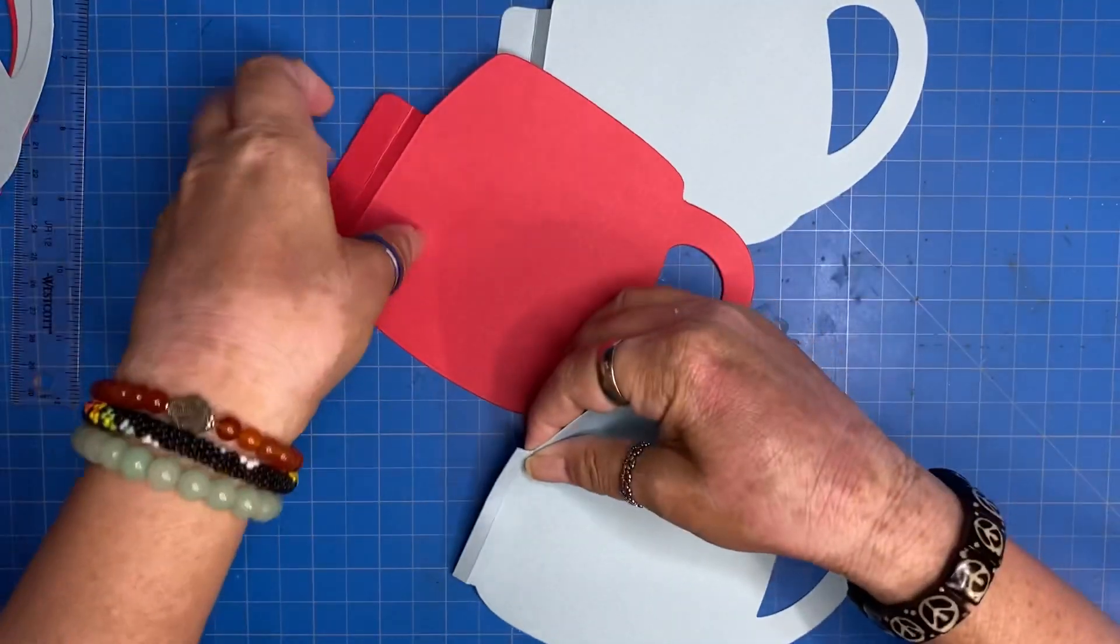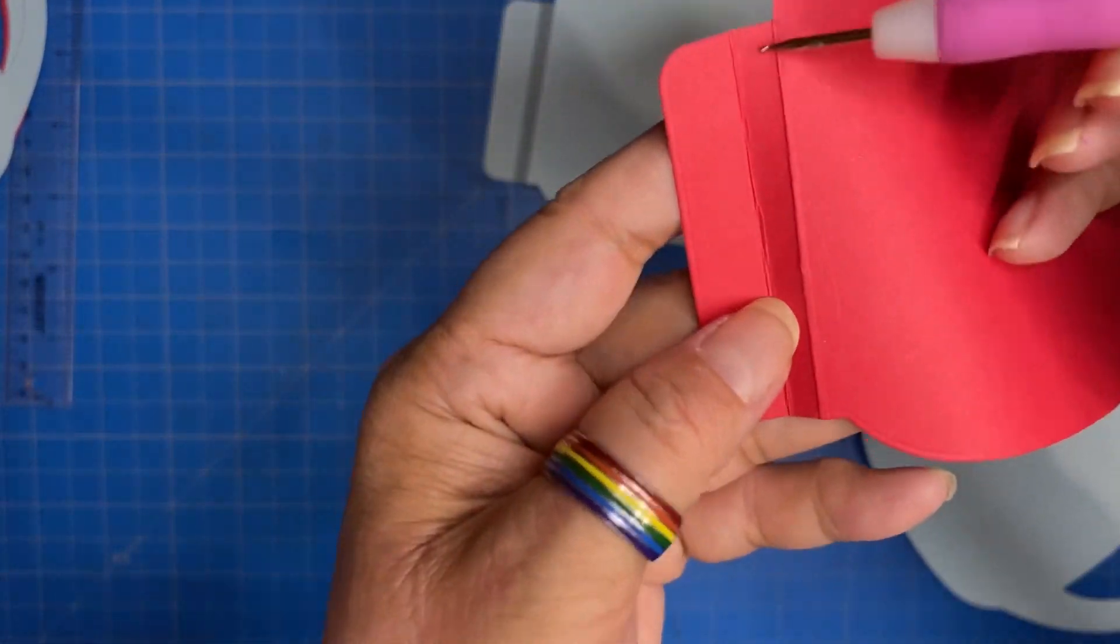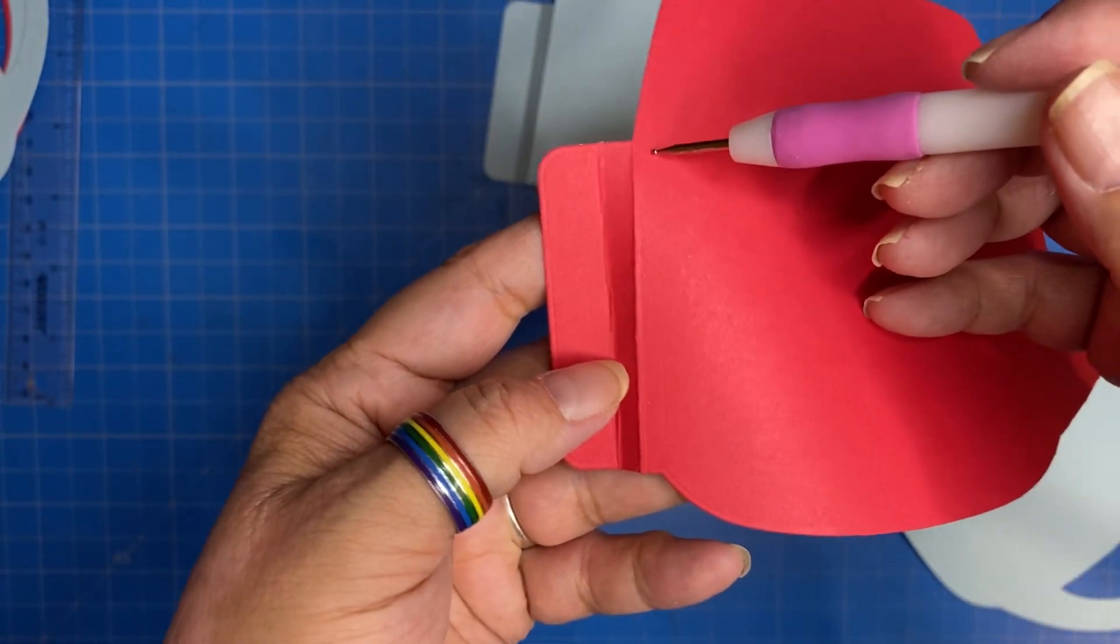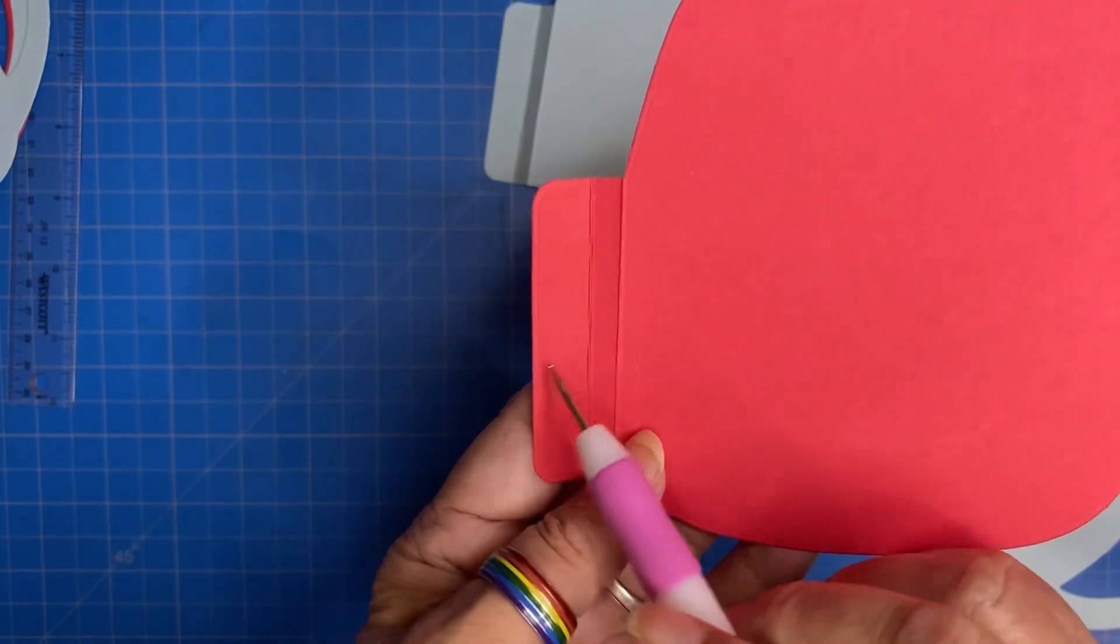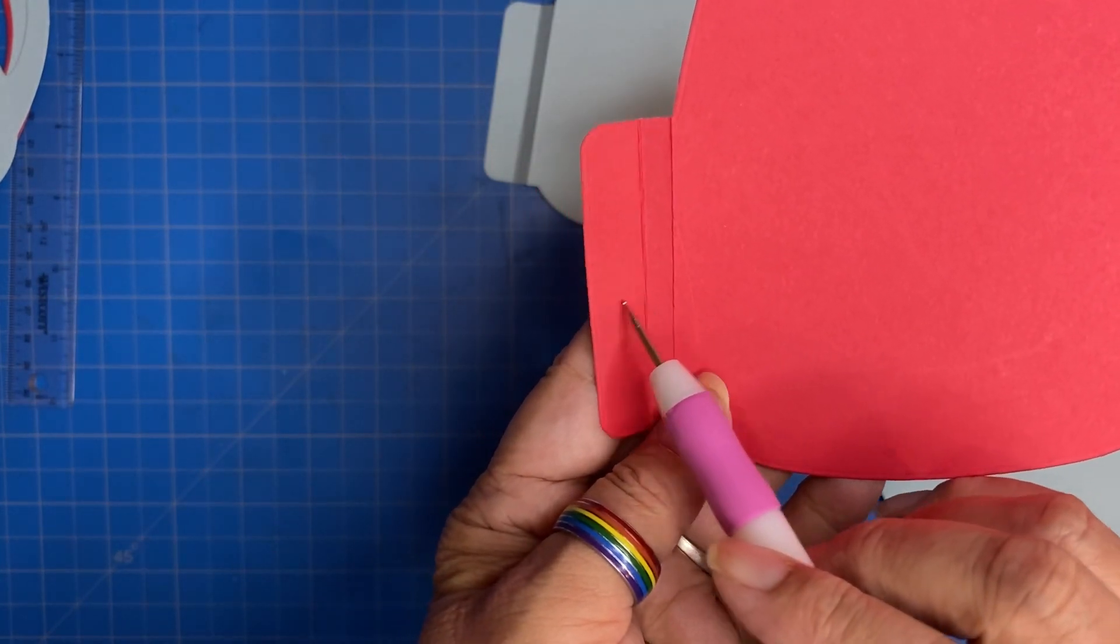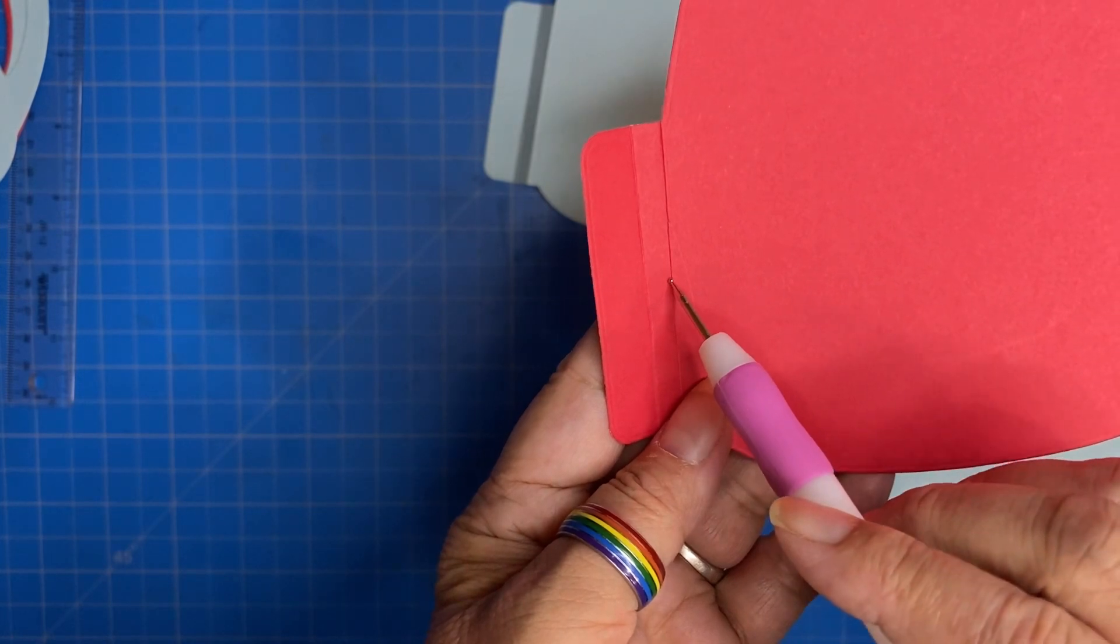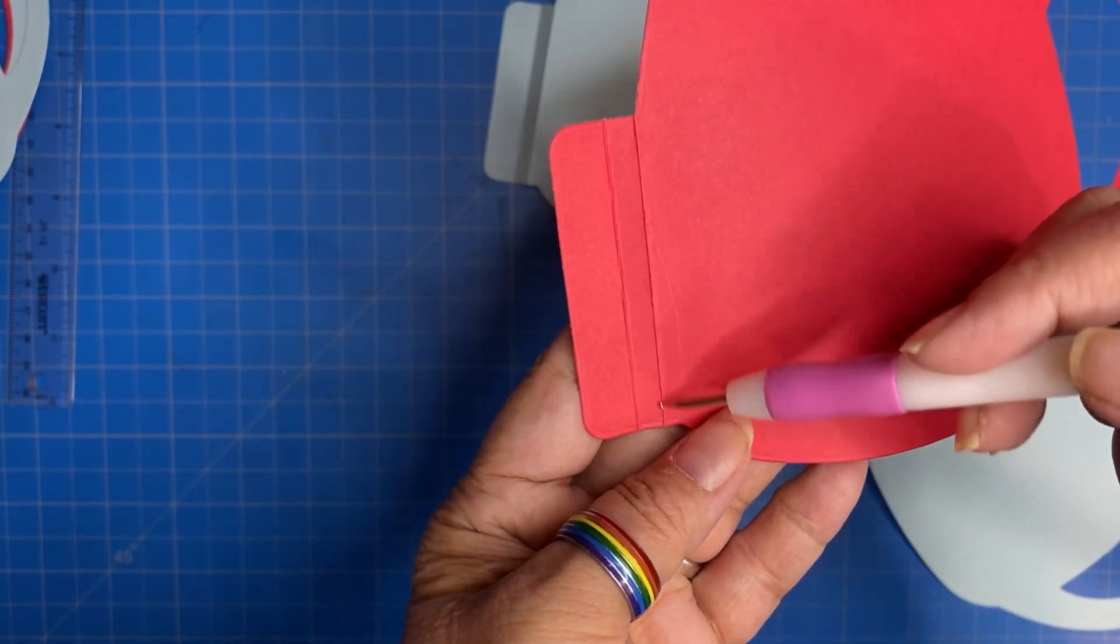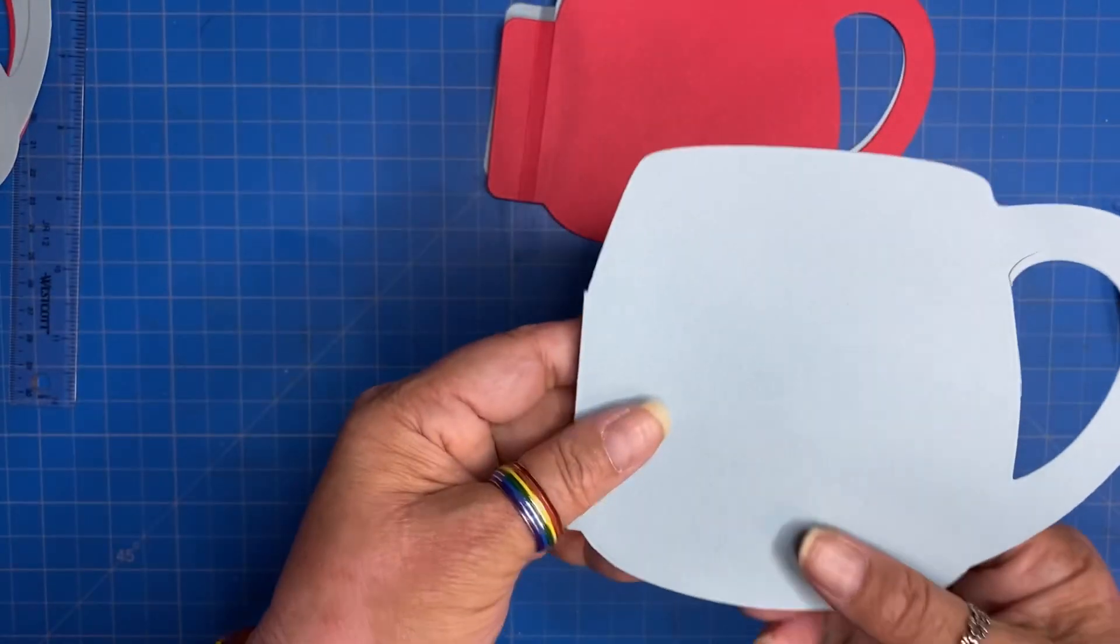And I'm going to line it up right at this furthest line. Here's the tab that we're going to be gluing. And here's the quarter-inch gusset. And this is that inside score line.